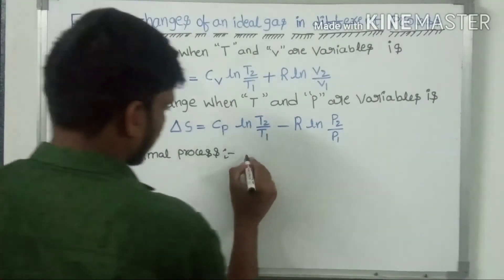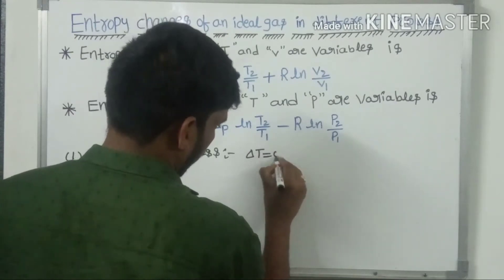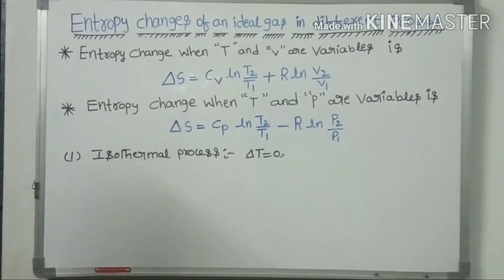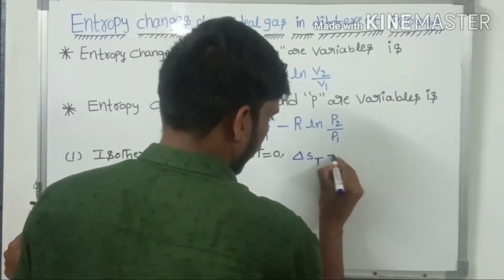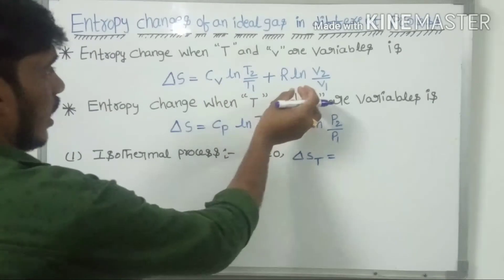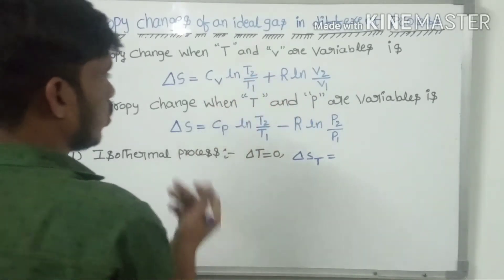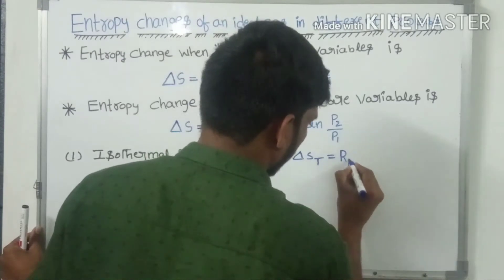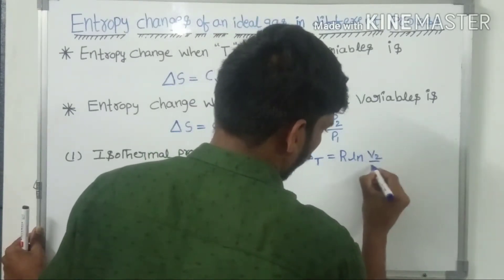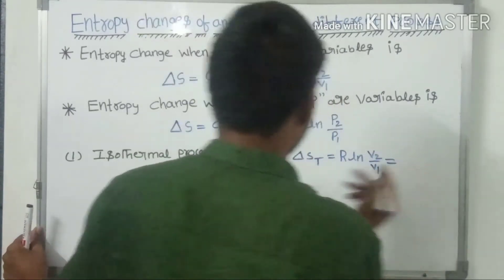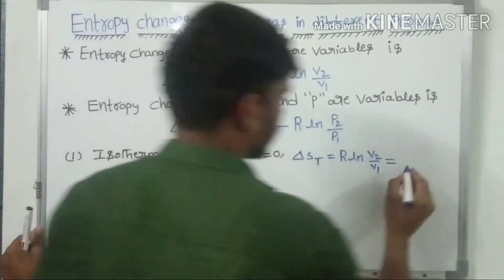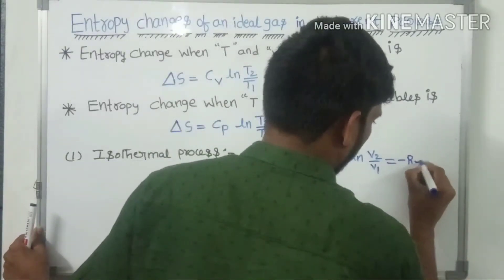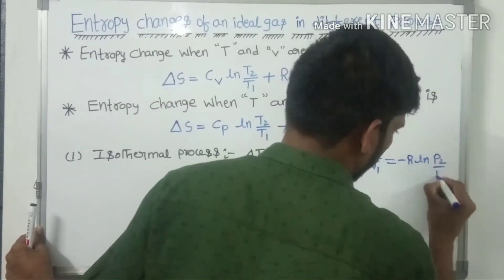In the isothermal process, delta T is equal to 0. Therefore the entropy change in an ideal gas in an isothermal process is: delta S subscript T equals R ln(V2/V1). And in terms of temperature and pressure variables, it becomes minus R ln(P2/P1).